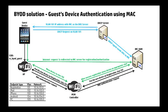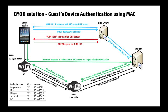At that point the access point moves the guest device — it gets disassociated and then reassociated with VLAN 102. Now it's connected back to the network, but it doesn't have a valid IP address for VLAN 102. So it sends a DHCP request on VLAN 102. The DHCP server responds with a valid IP address for VLAN 102 along with the network DNS server. The guest device authentication process is now complete — it has an IP address on a subnet corresponding to the specific device type and is able to access the internet.